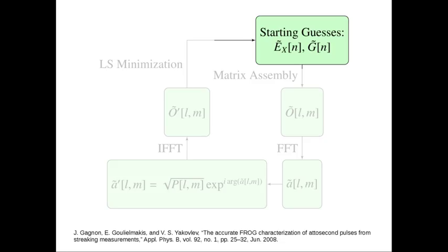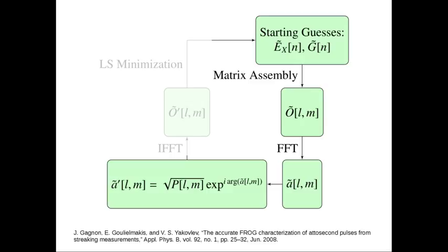A typical FROG retrieval starts with guesses for the pulse and gate function, assembles a time domain matrix, uses an FFT to transform that to the energy domain, projects the measured spectrogram magnitude, and converts this back to the time domain. It then uses a minimization procedure to get an updated guess for both pulses.